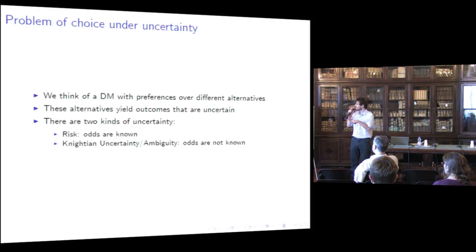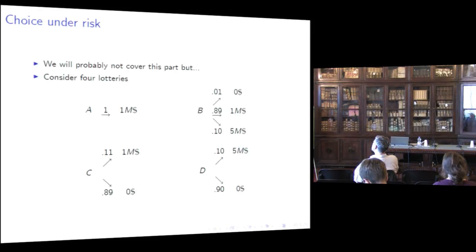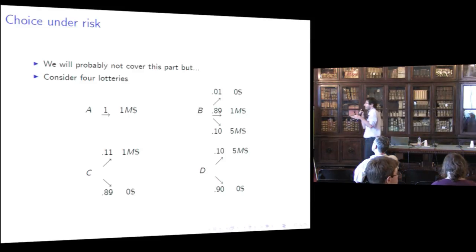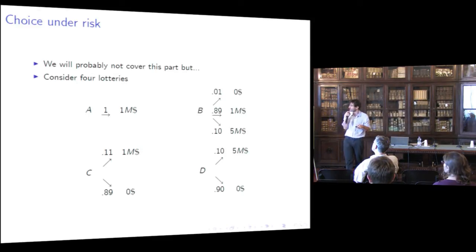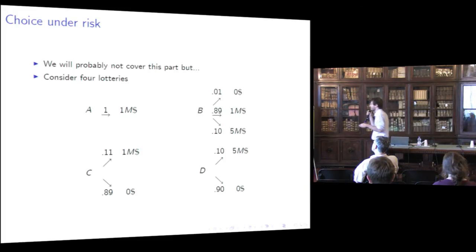Today I will mostly confine myself to choice under ambiguity. But for the sake of clarity, let me give you two situations — two different problems of choice — where the first is a problem of choice under risk and the second is a problem of choice under ambiguity. Consider four lotteries as four alternatives.